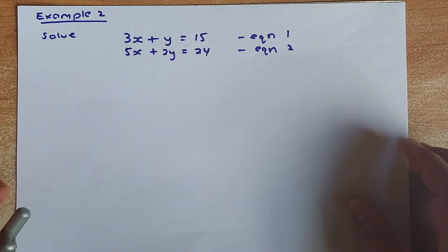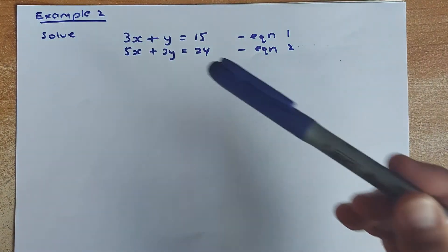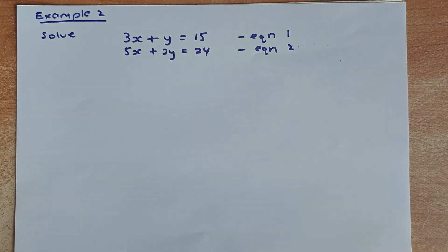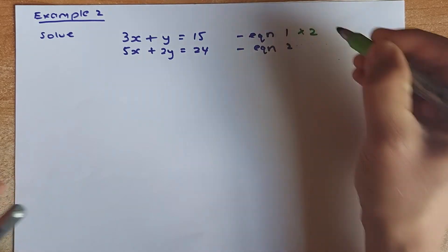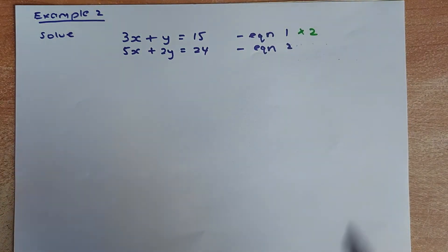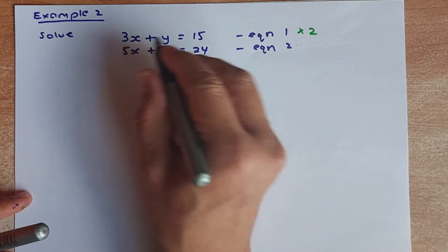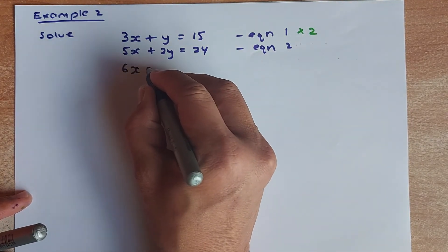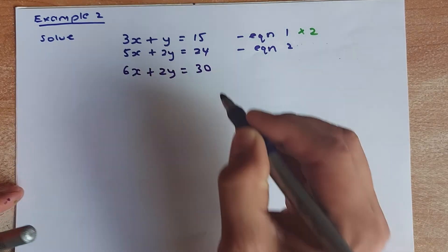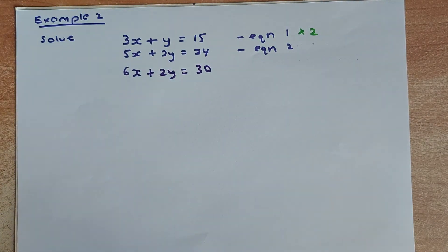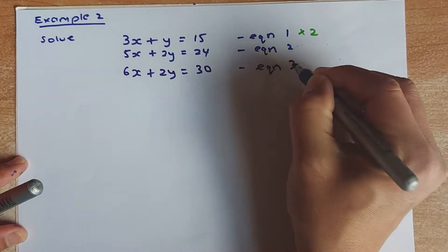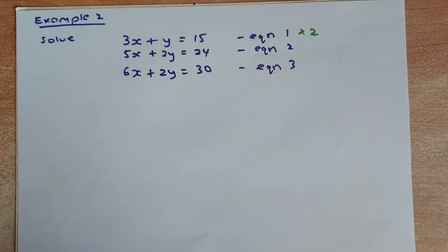Let's look at another example — this time it's a little bit harder. The coefficients of X and Y are all different: the coefficient of X is 3 and 5, and the coefficient of Y is 1 and 2. What you need to do is make the coefficients the same. I would recommend multiplying equation 1 by 2, so the new equation becomes 6X plus 2Y equals 30. We'll call this equation 3.